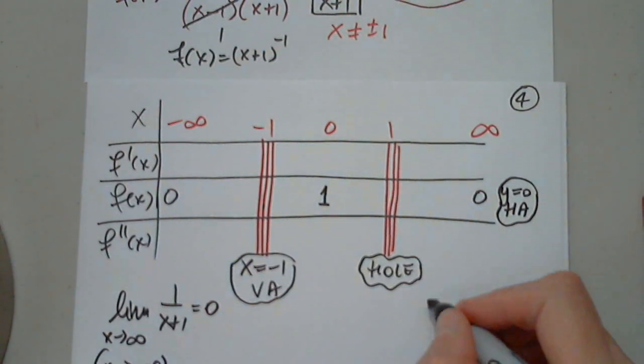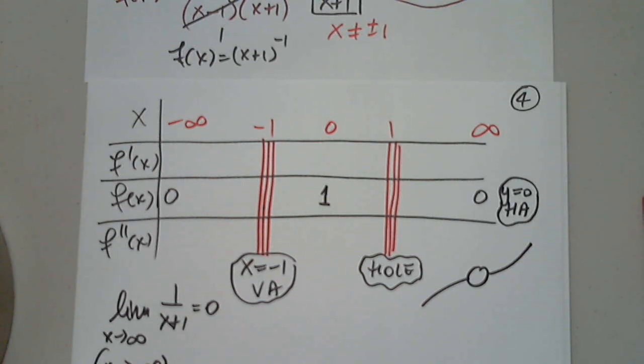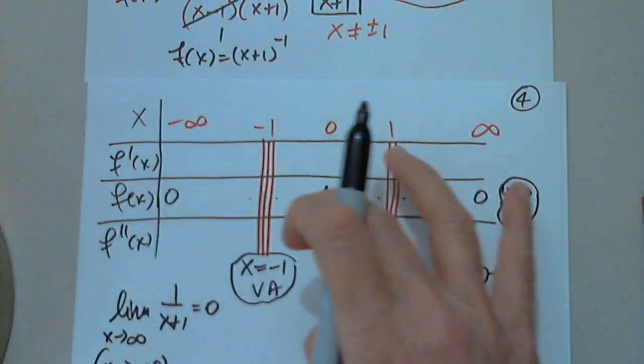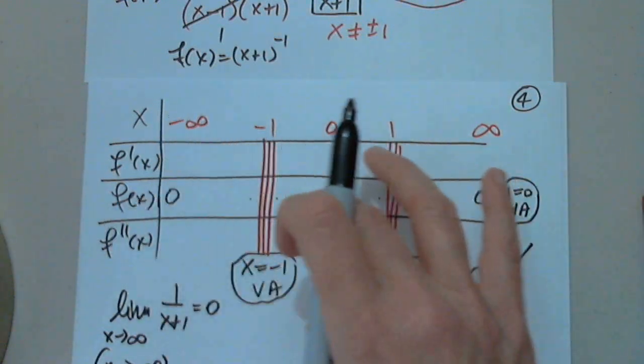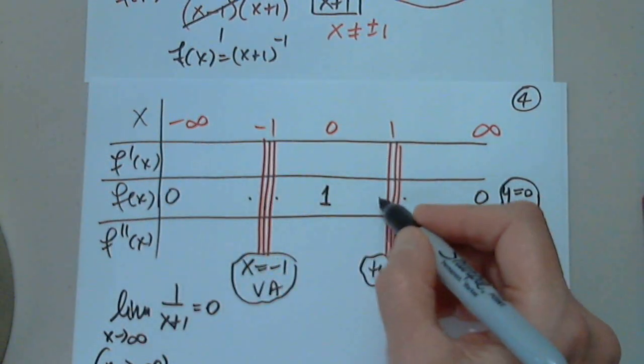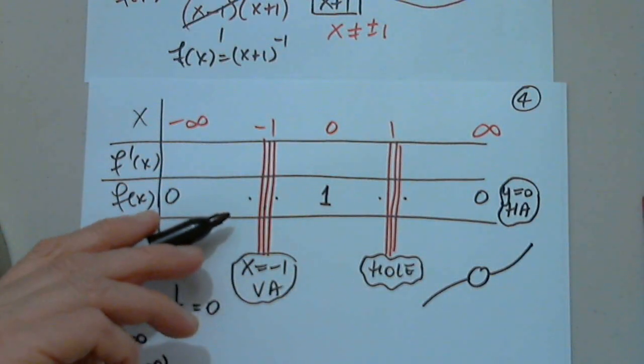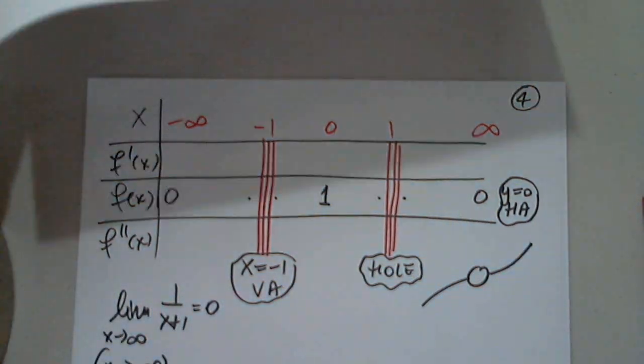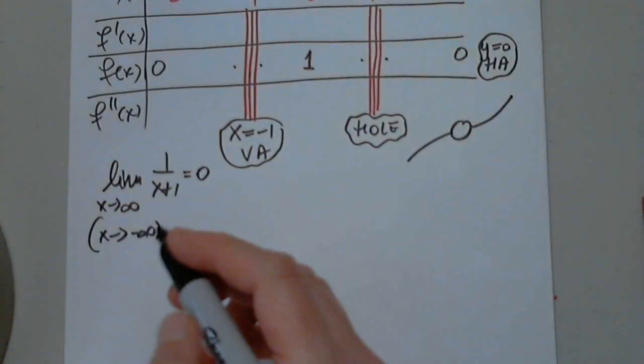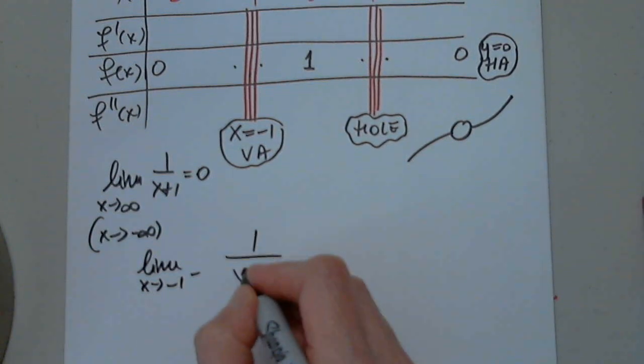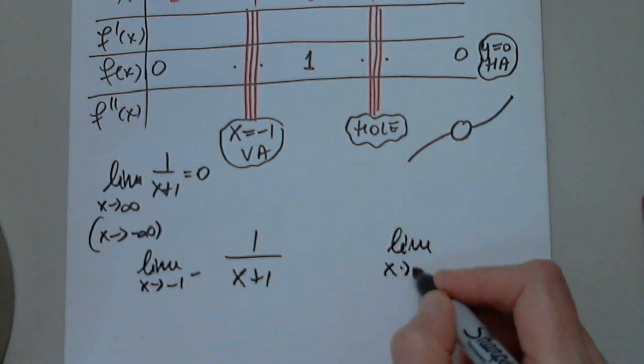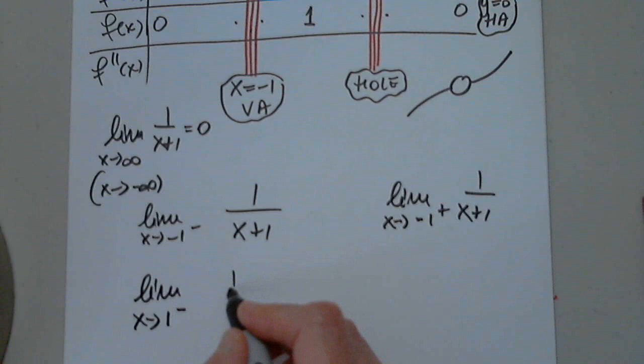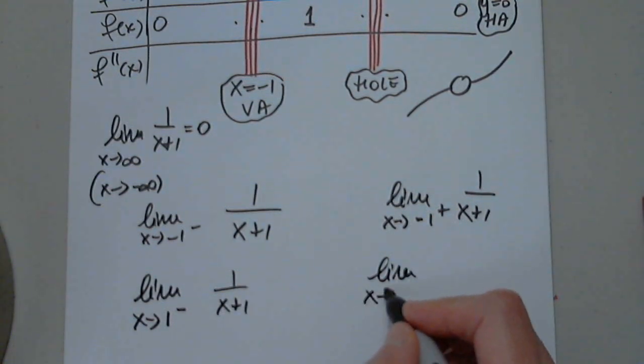Can anyone give us the limits here? Limit of one over x plus one when x approaches infinity and when x approaches negative infinity. Can anyone give us this? Zero. Yes, absolutely. One divided by infinity is zero. I make myself a note: y equals zero, horizontal asymptote. What's a hole? Now we have to determine the limit from the left of negative one, the limit from the right of negative one, the limit from the left of one, and the limit from the right of one.